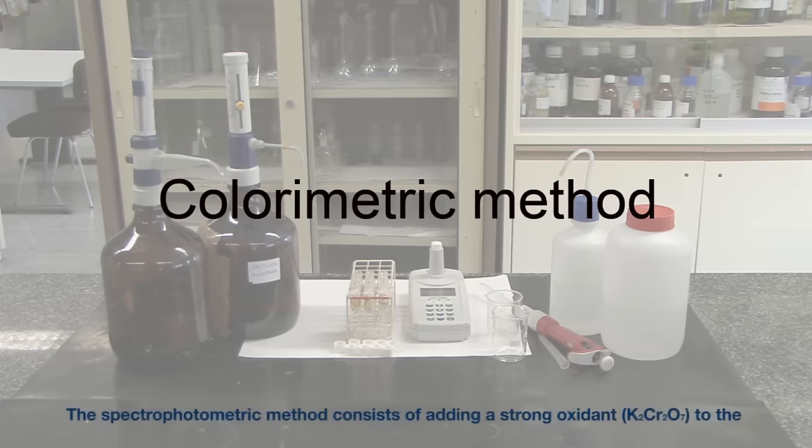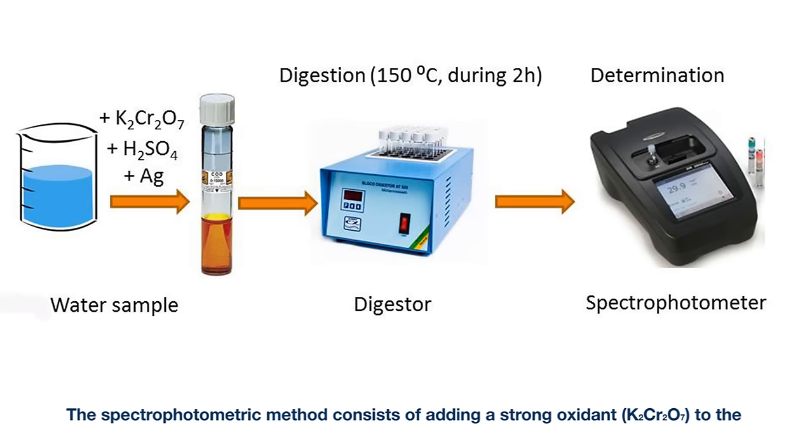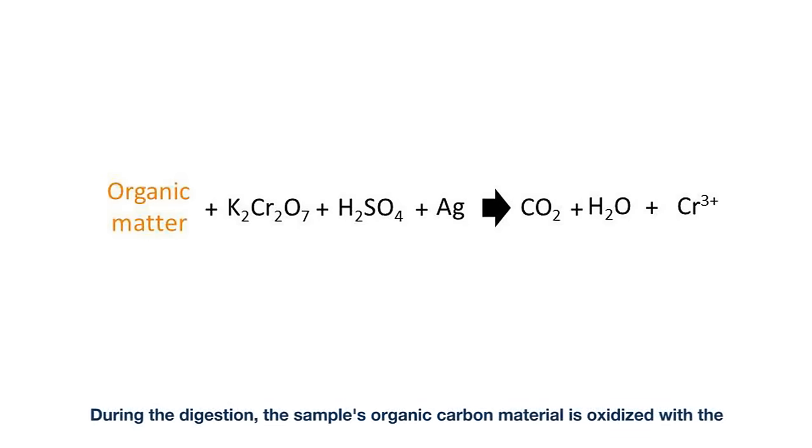The spectrophotometric method consists of adding a strong oxidant to the water sample under acidic conditions and using silver as a catalyst. The sample is then digested for two hours at 150 degrees Celsius and its determination is done by using a spectrophotometer.